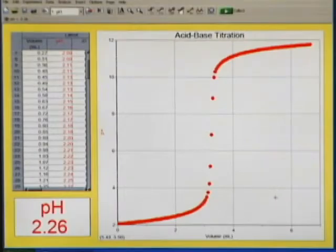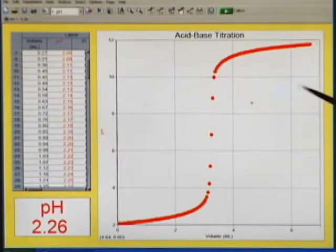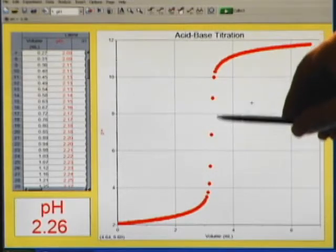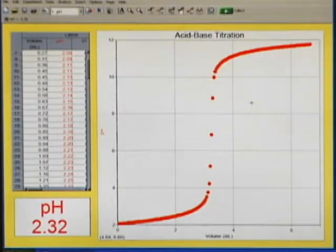So here's our completed titration data. We want to find the equivalence point of this, so if you look at this pH data, you can see that probably between these two drops is the largest jump in pH, but that doesn't give us a very accurate reading doing that.